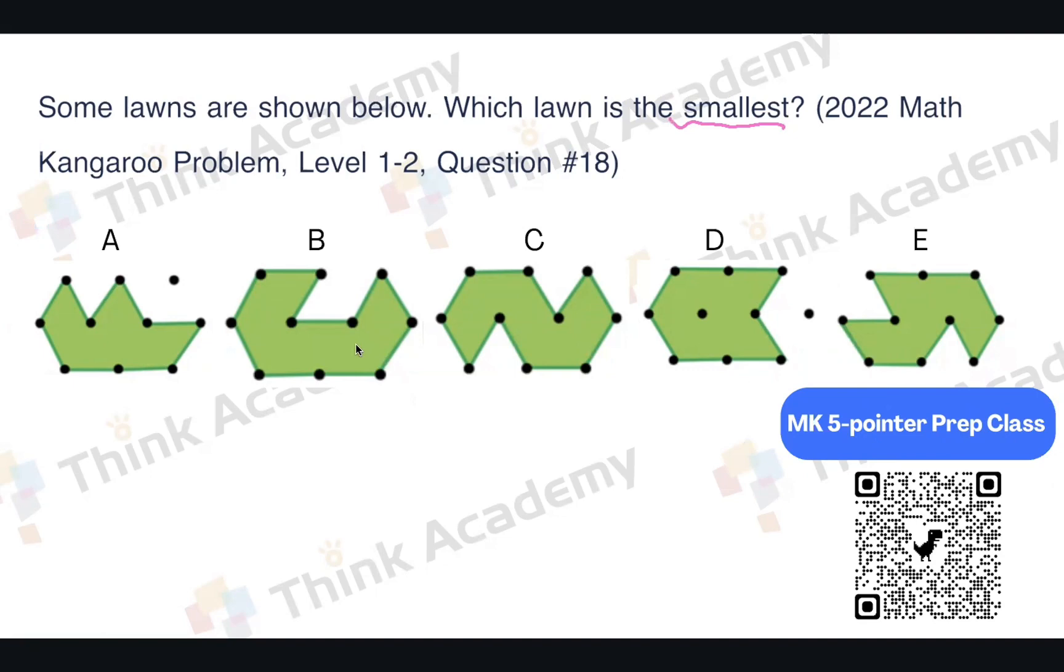we need to find out the same unit to count. Each of the lengths here covers how many units. And everyone can find what is the smallest unit here. Exactly. We have this small triangle, right? The three points together can make this a small triangle.